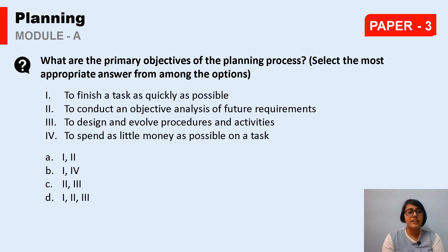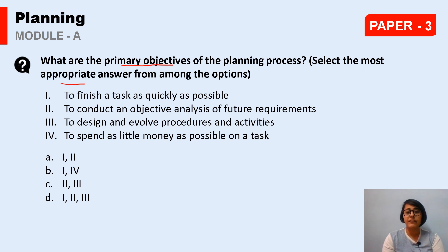The first question is: What are the primary objectives of the planning process? We are given certain statements and need to select the most appropriate answer. The statements are: 1) To finish a task as quickly as possible, 2) To conduct an objective analysis of future requirements, 3) To design and evolve procedures and activities, 4) To spend as little money as possible on a task.